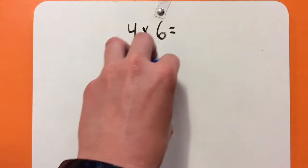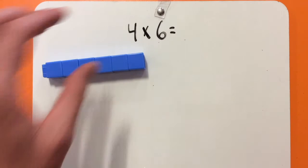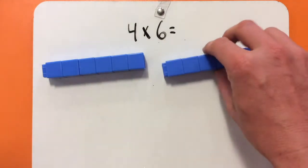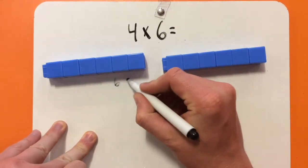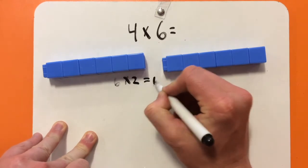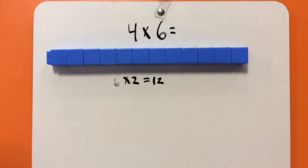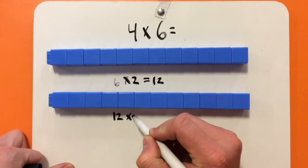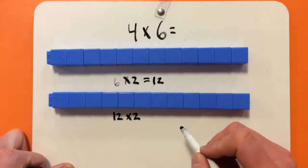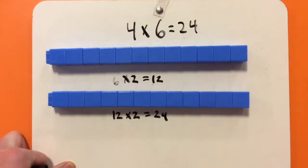If we extend this to our number 6, we know that double 6 is 12. So, 6 times 2 equals 12. And then if we double 12 — 2 more 6s — we know that 12 times 2, or double 12, is 24. So, 4 times 6 is 24.